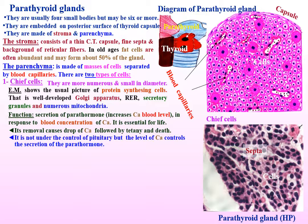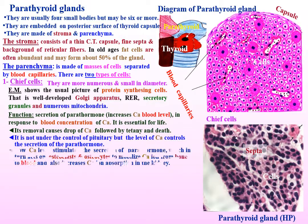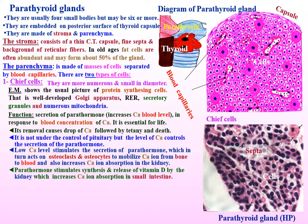Low calcium level stimulates the secretion of parathormone, which in turn acts on osteoclasts and osteocytes to mobilize calcium ions from bone to blood, and also increases calcium absorption in the kidney. Parathormone stimulates synthesis and release of vitamin D by the kidney, which increases calcium absorption in the small intestines.